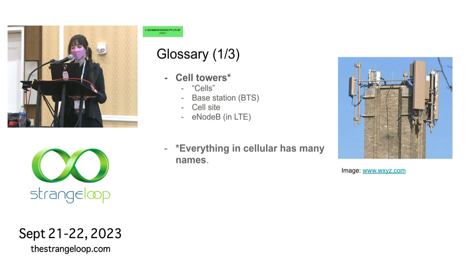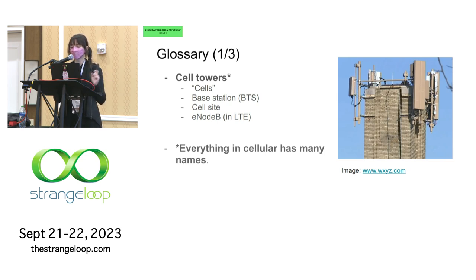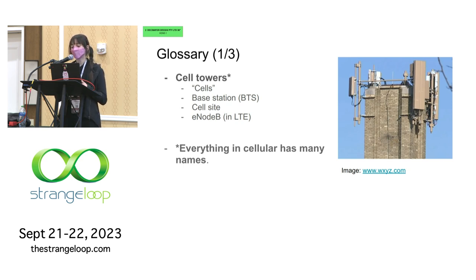Let's go over some terminology first. Cell towers are the collections of antennas and computers that your phone talks to to get connected to the network. People who work on mobile network stuff usually just call them cells or base stations, or BTS for short, which is one of the ways I'll be referring to them throughout this talk. They're also often called cell sites or E Node Bs in the standards. And even though they have the word tower in them, they're often not actually towers anymore, but usually just rectangular antennas mounted on buildings.